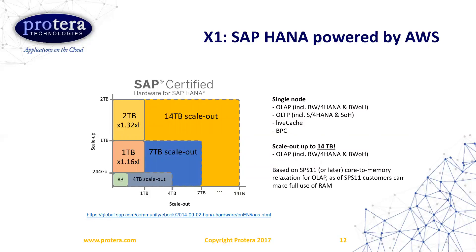Announced at re:Invent, this slide covers the scale-out capability with the new one-terabyte virtual system. You can scale up to two terabytes per system; going from one to two terabytes may require copying data over to a larger system, though some same-family instances allow a simple stop-and-resize. Scale-out — adding systems horizontally — is only available for BW/OLAP workloads, combining up to seven systems into a 14-terabyte scale-out solution.